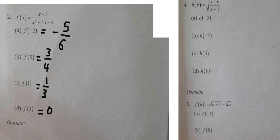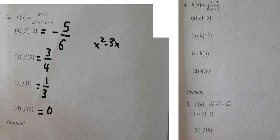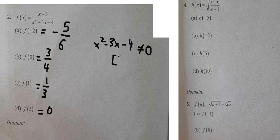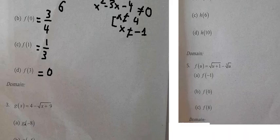For the domain of question two, we can see that s minus three and s minus four cannot equal zero, because we cannot allow zero in the denominator. So s cannot equal four and s cannot equal negative one. The domain of this function should be like this.